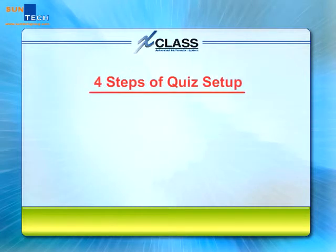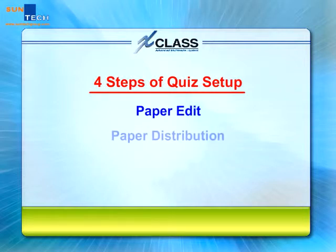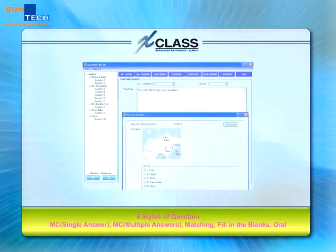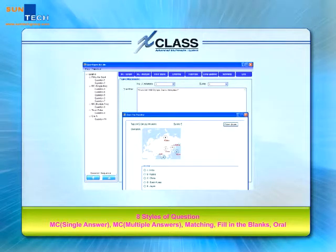When it comes to student assessment, XClass is greatly enhanced in our latest EVO version. Teachers can follow four simple steps to track each student's learning progress. First, teachers can create a quiz in the paper editor, which enables them to prepare quizzes easily in eight different question types. To enrich quiz content, text, paper, and multimedia files can be attached.